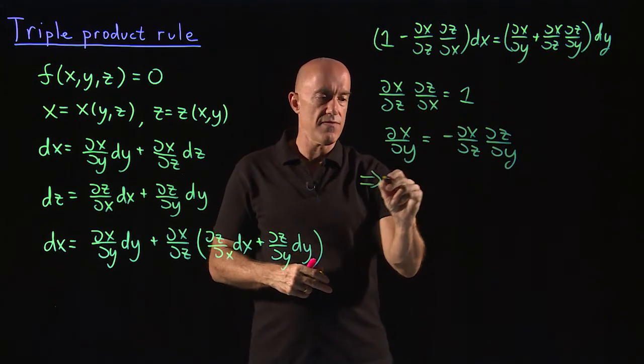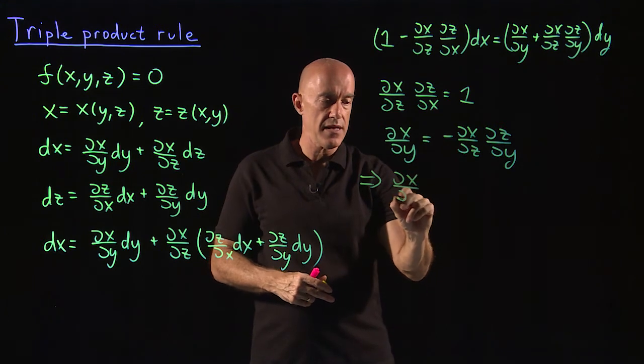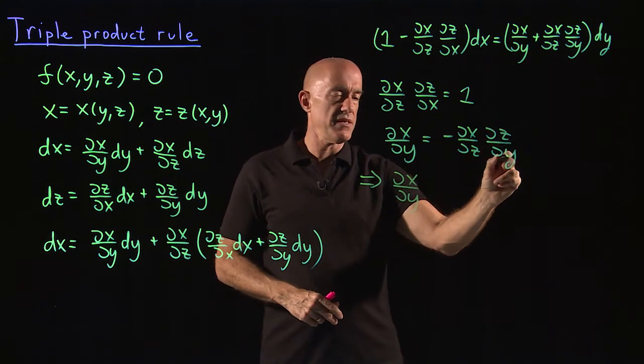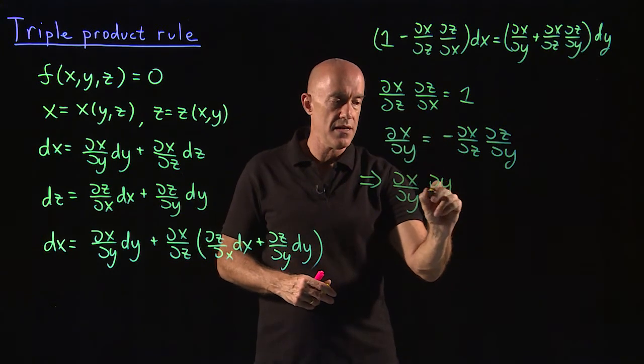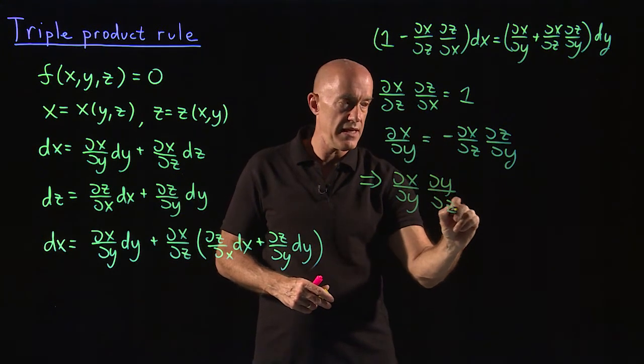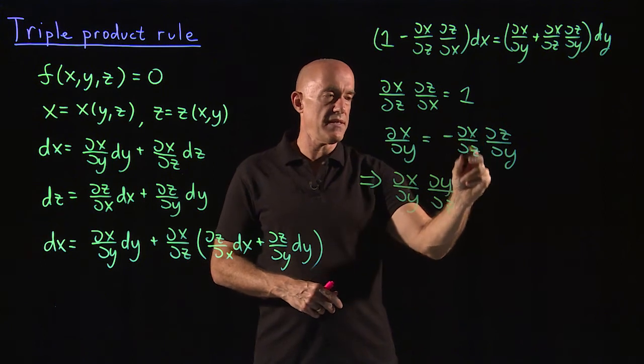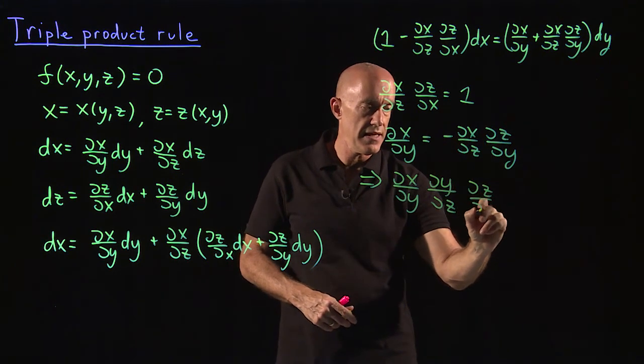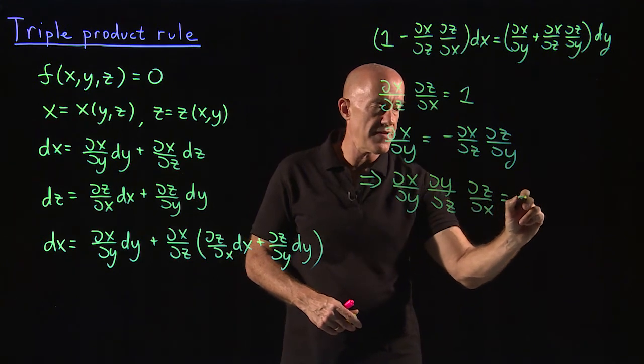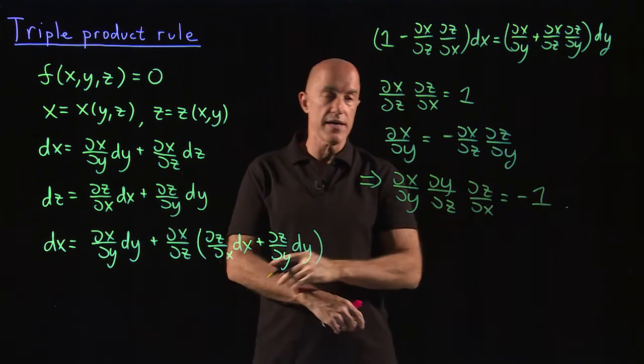So this one is equivalent to dx dy. We move the dz dy to the left, it becomes dy dz, so dy dz. And then we move the dx dz on the right to the left, so it becomes dz dx. And what we have left is a minus one.